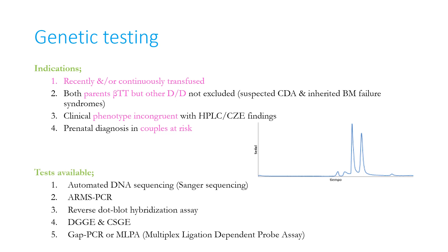The various genetic tests available are Sanger sequencing or automated DNA sequencing, PCR-based amplification refractory mutation system (ARMS), reverse dot blot hybridization assay, denaturing gradient gel electrophoresis and conformation-sensitive gel electrophoresis, and GAP-PCR or multiplex ligation-dependent probe assay (MLPA) to detect deletional alpha thalassemias.